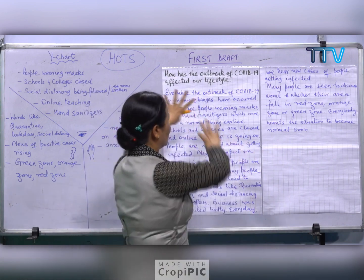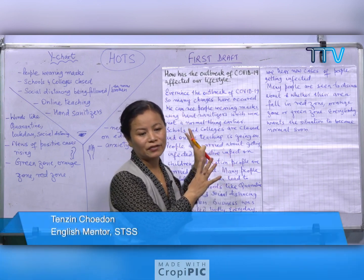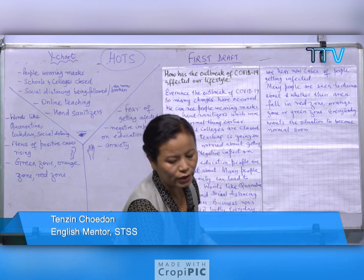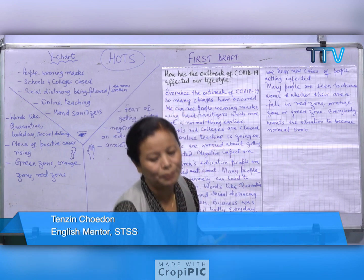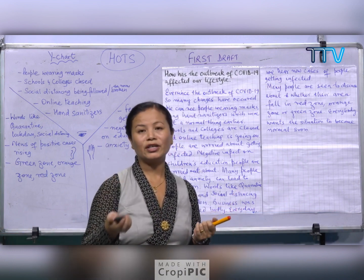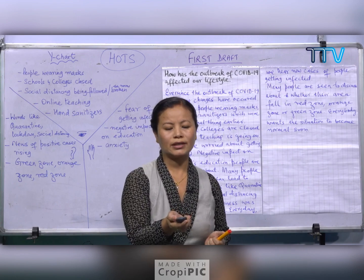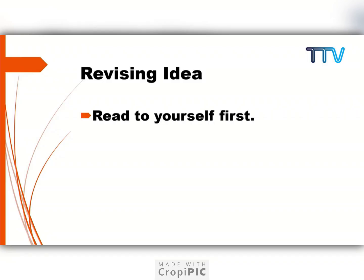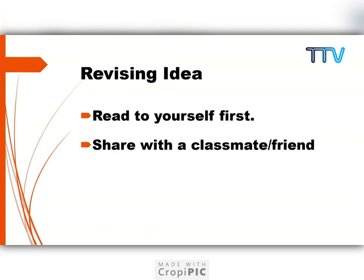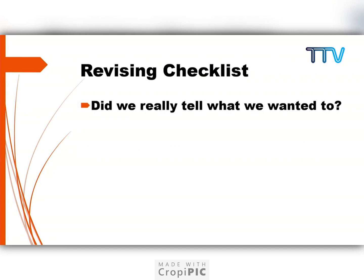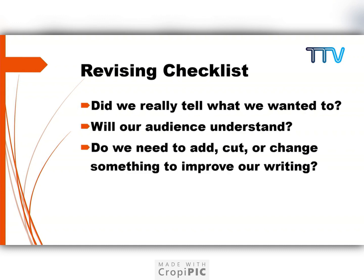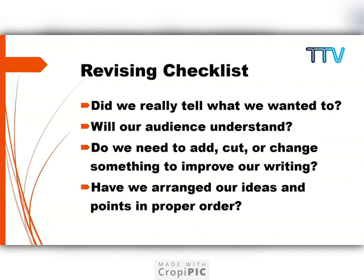Now we have the first draft and we need to revise it. I'm quickly going to revise because this is the next step of the writing process. The revising checklist: read to yourself first; share with a classmate or friend; then check — did we really tell what we wanted to? Will our audience understand? Do we need to add, cut, or change something to improve our writing? Have we arranged our ideas and points in proper order?